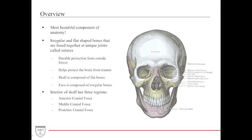The irregular shaped bones are what you would consider to be the facial bones. Then you have the flat shaped bones, which are the ones that more or less compose the skull cap — the structures that keep the central nervous system protected. The skull is also divided into three interior regions called the anterior, middle, and posterior cranial fossa, and we'll describe what their borders are in a little bit.